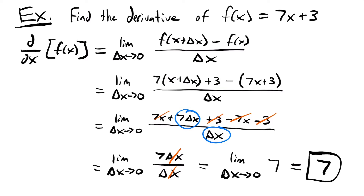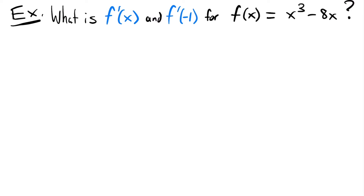So the derivative of 7x + 3 is 7. Now we're going to do an example that will take a little more time but will be very rewarding. We're finding f prime of x — another way to write the derivative — and the slope at x equals negative 1, for the function x cubed minus 8x.